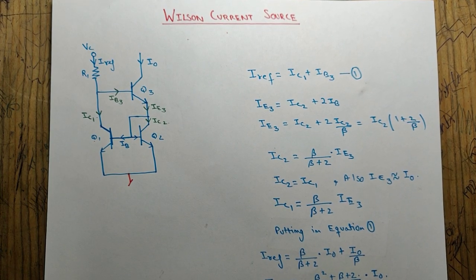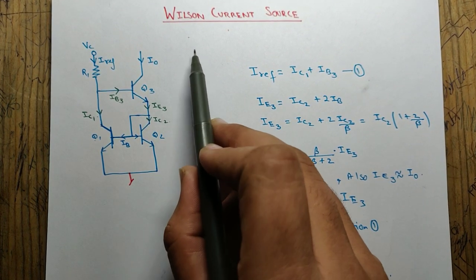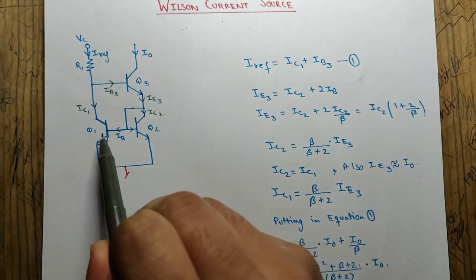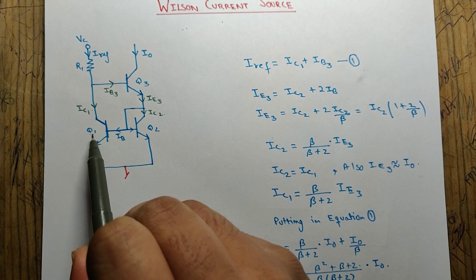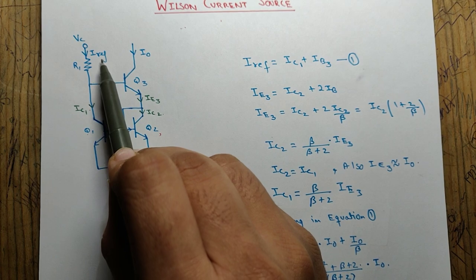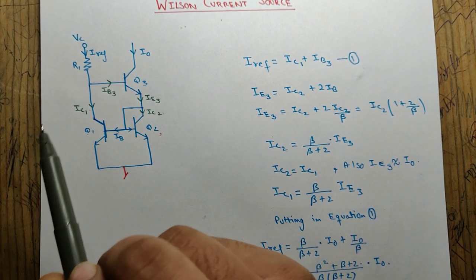Hello guys, welcome to another tutorial by Supreme Tuber. In this video I will be teaching you Wilson Current Source. This is the basic setup of Wilson Current Source. You can see it carefully, it has three transistors Q1, Q2, and Q3. This is our reference current and this is our output current.